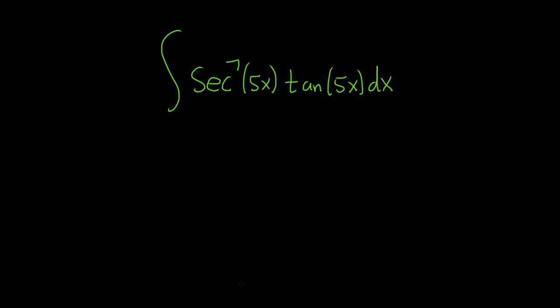If you have an even power of secant you save a secant squared and if you have an odd power of tangent you save a secant tangent. So even secant save a secant squared, odd tangent save a secant tangent, and that will guide you through most of the problems.